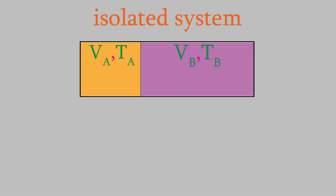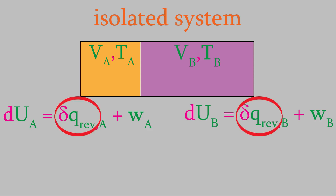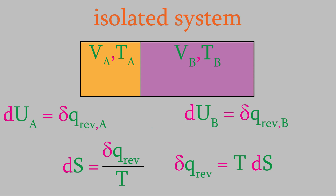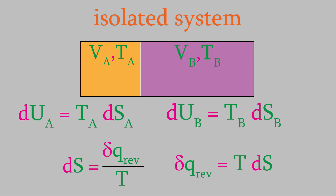Let's think about some equations we know for the entropies and energies of the two sides of the container. For the energy, we know that the change in energy is equal to the change in heat plus work, and that's true for both chambers. We'll use derivatives for infinitesimally small changes, and the heat will be for a reversible process. Also, remember that the wall doesn't move, so by definition there won't be any work performed, and we can drop work out of the equations. Now, using the definition of entropy suggested by Josiah Gibbs — rearranging slightly — we can see that the heat exchange equals the temperature times the change in entropy. Plugging that into our energy equations, we can determine the entropy change for each chamber by solving for dS.